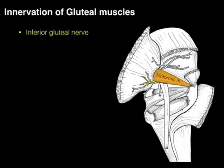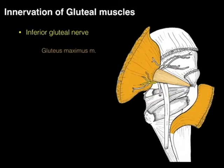The inferior gluteal nerve courses below the piriformis to innervate the gluteus maximus muscle.